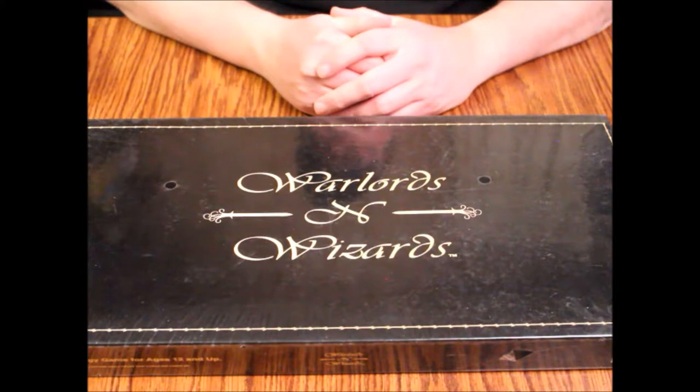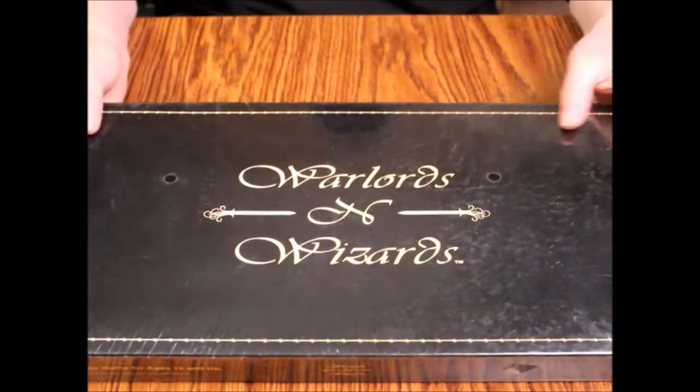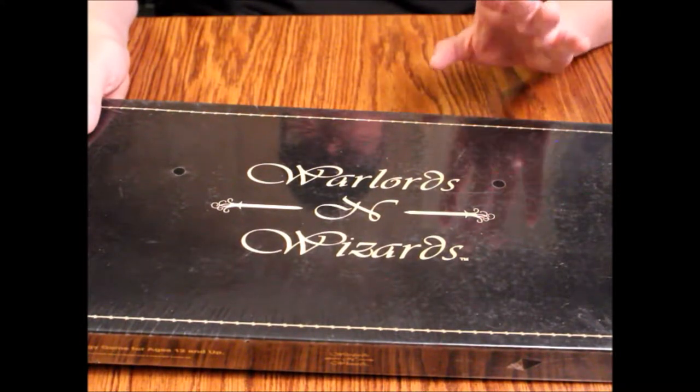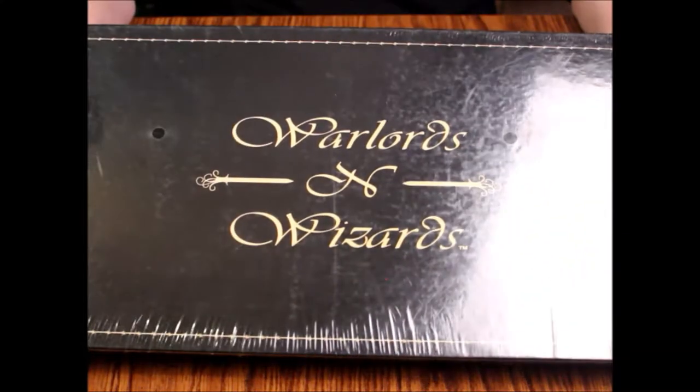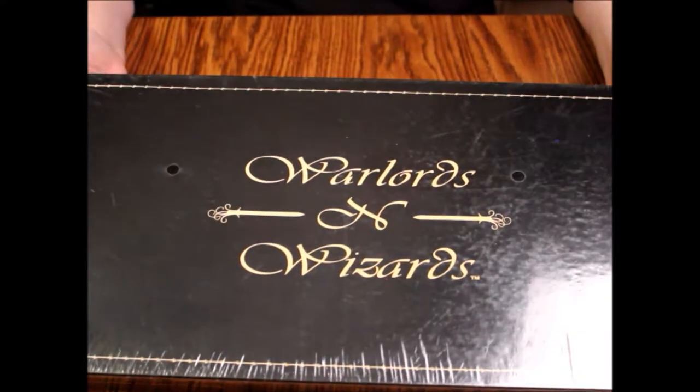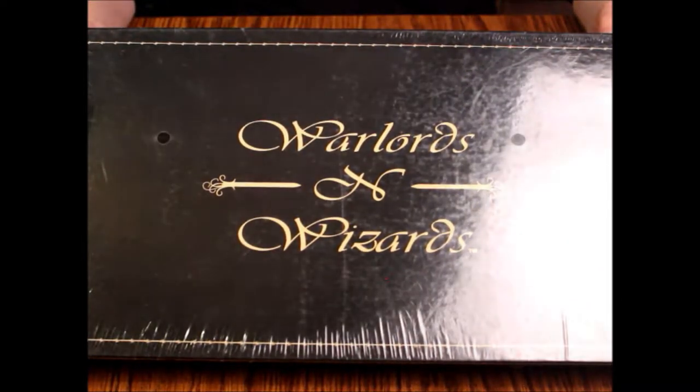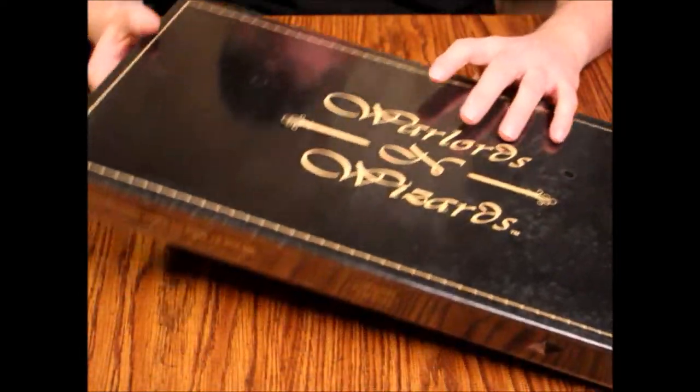Hello and welcome to another episode of What's Inside. Today you're seeing my reflection in the plastic here. We are looking at Warlords and Wizards, the board game. This is a strategy game for ages 12 and up, two players. May contain small parts that a child can choke on, naturally, because children are pretty good at choking on little stuff.